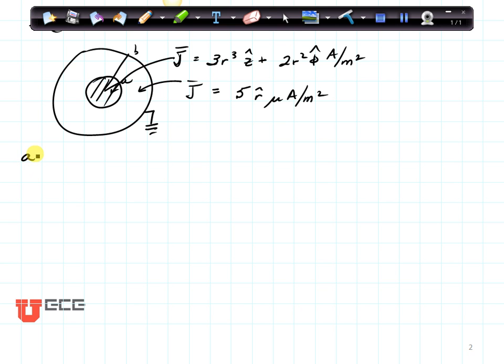So let's begin with part A. Let's find the magnetic field in the region r is less than a. We're going to use Ampere's law to do this, because we can see that everything is radially symmetric.